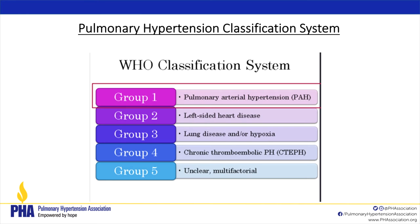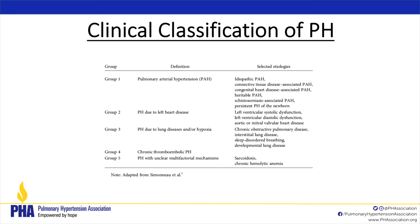When you come to your provider, we try to figure out which classification group you're in. There are five WHO groups for pulmonary hypertension. Group 1 is pulmonary arterial hypertension. Group 2 is due to left heart disease. Group 3 is lung disease and hypoxia — decreased oxygen levels. Group 4 is chronic thromboembolic PH, which we call CTEPH. Group 5 is everything else — unclear or multifactorial causes.